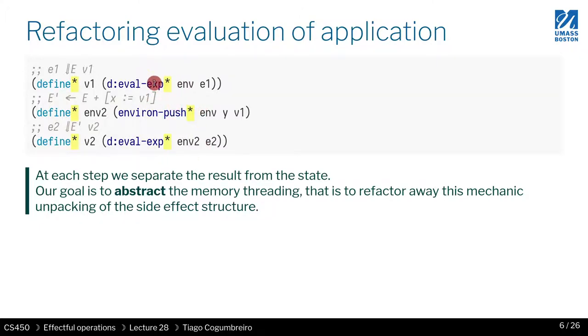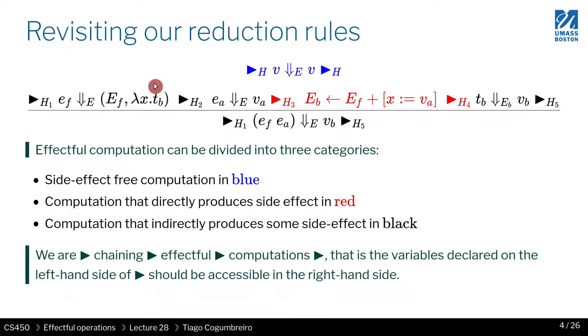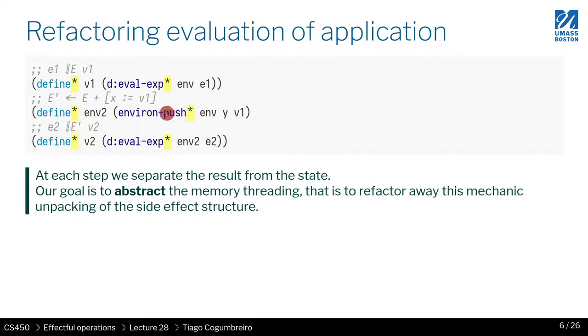You will notice that the memory or the heap disappears. There's no memory here, why? Because of the same reason in the notation, the formalism. We also don't generally show the heap being passed around because I told you that there's always a heap that passes from one operation to the next. So if that's always the case and that's true for all rules, you can just abstract that knowledge.